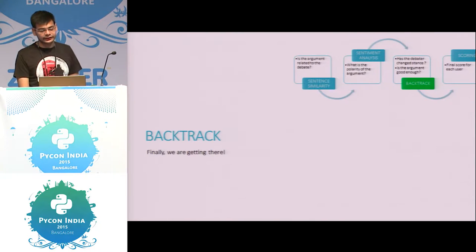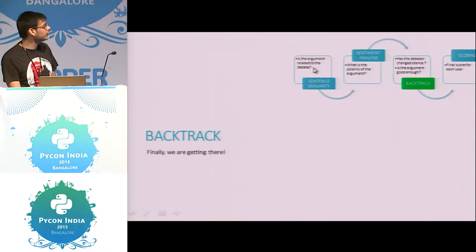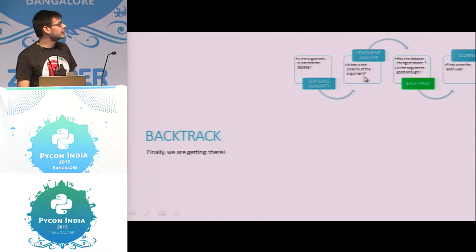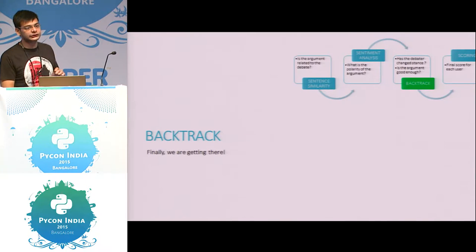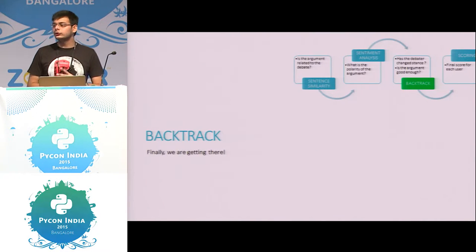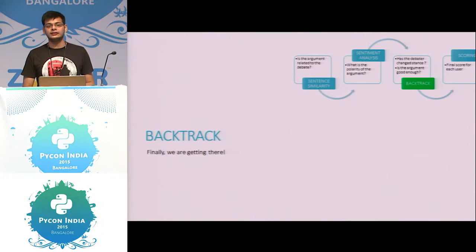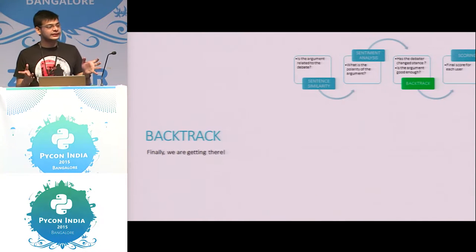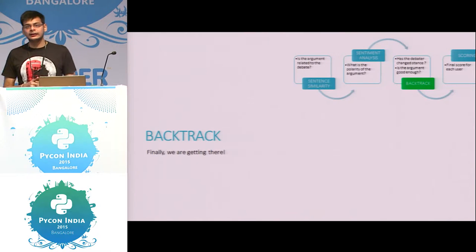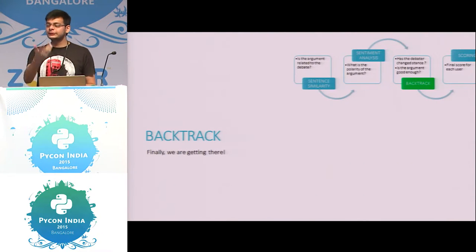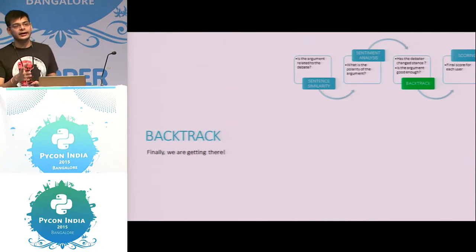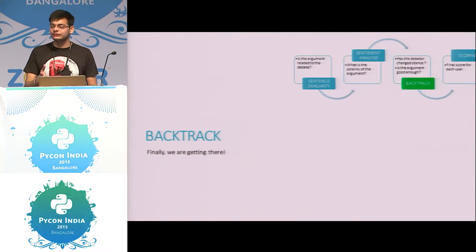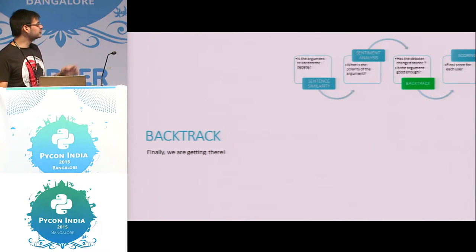So you have sentence similarity — which checks whether the argument is related to the debate — and sentiment analysis — which checks the polarity, whether positive, negative, or neutral. Now the basic question is: which two sentences should I compare? I can tell whether an argument is positive or negative, but how do I know what the debater's previous stance was? I need to keep track of which sentences to compare and which sentences to measure sentiment against. This is what we call backtracking.